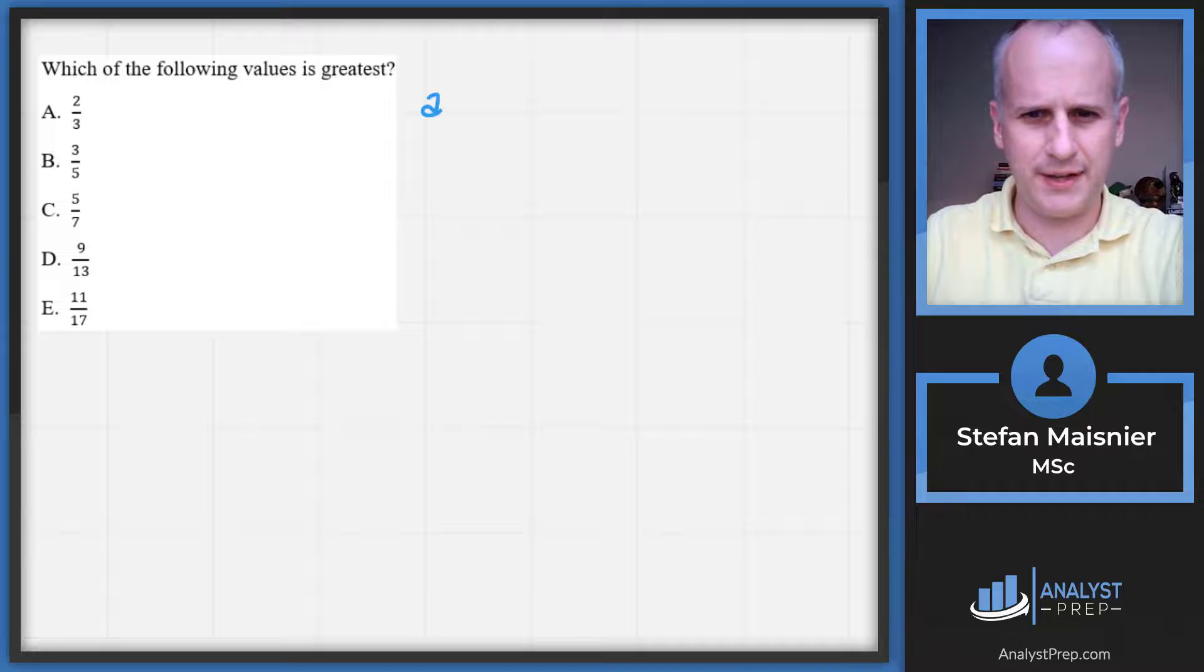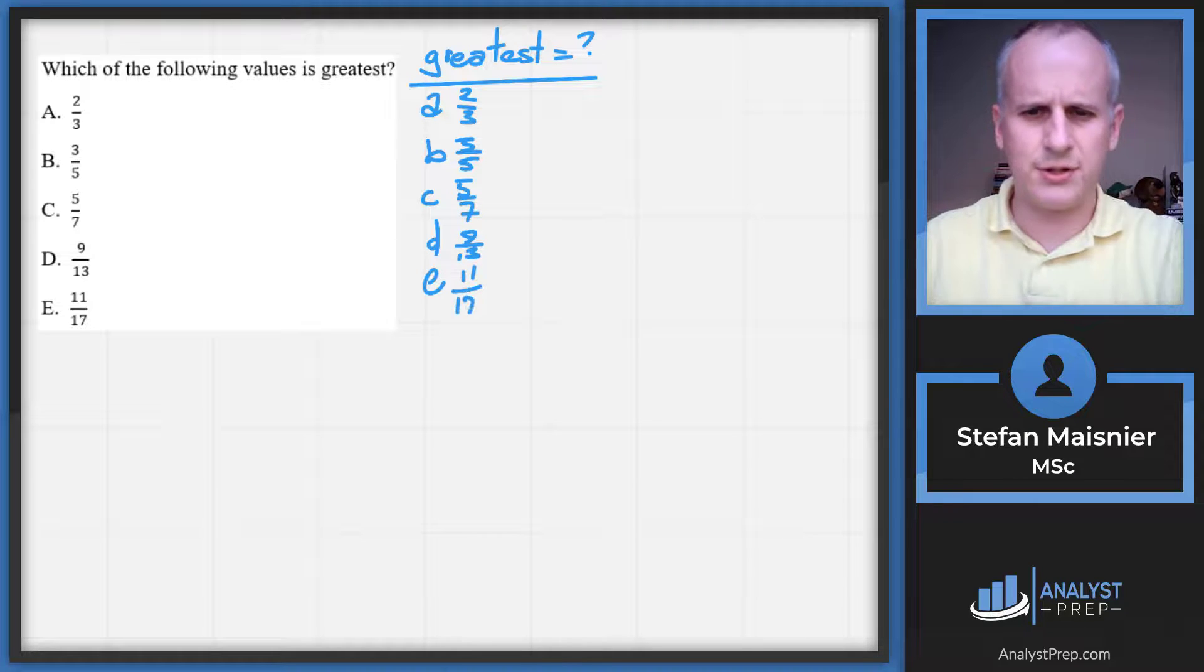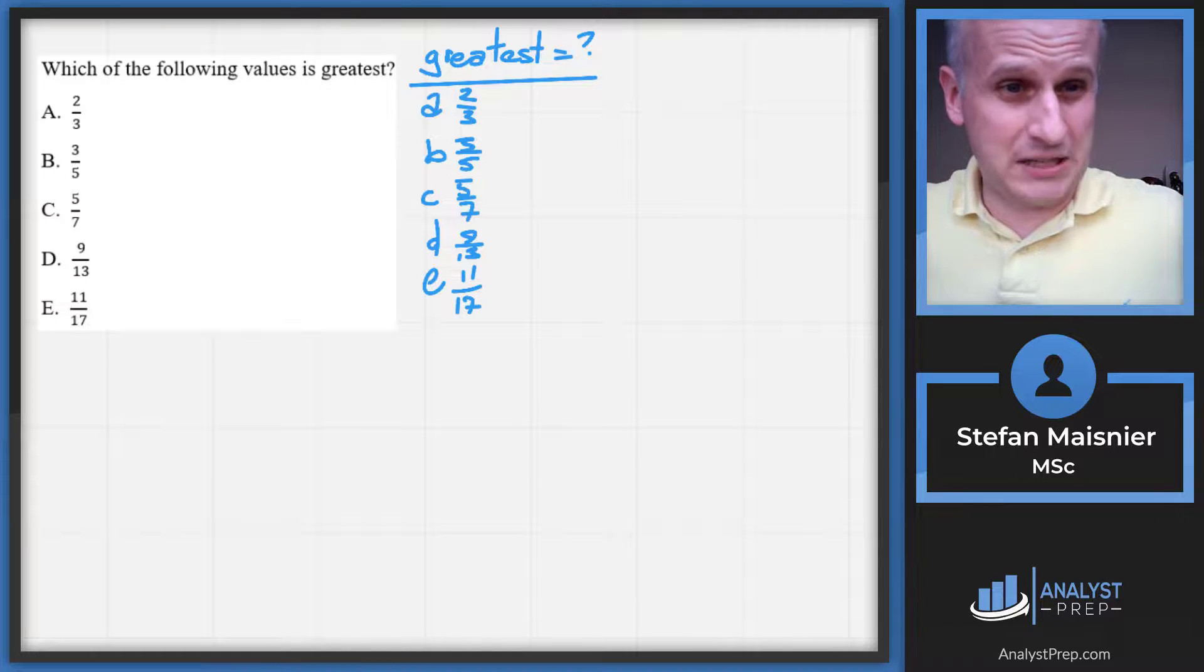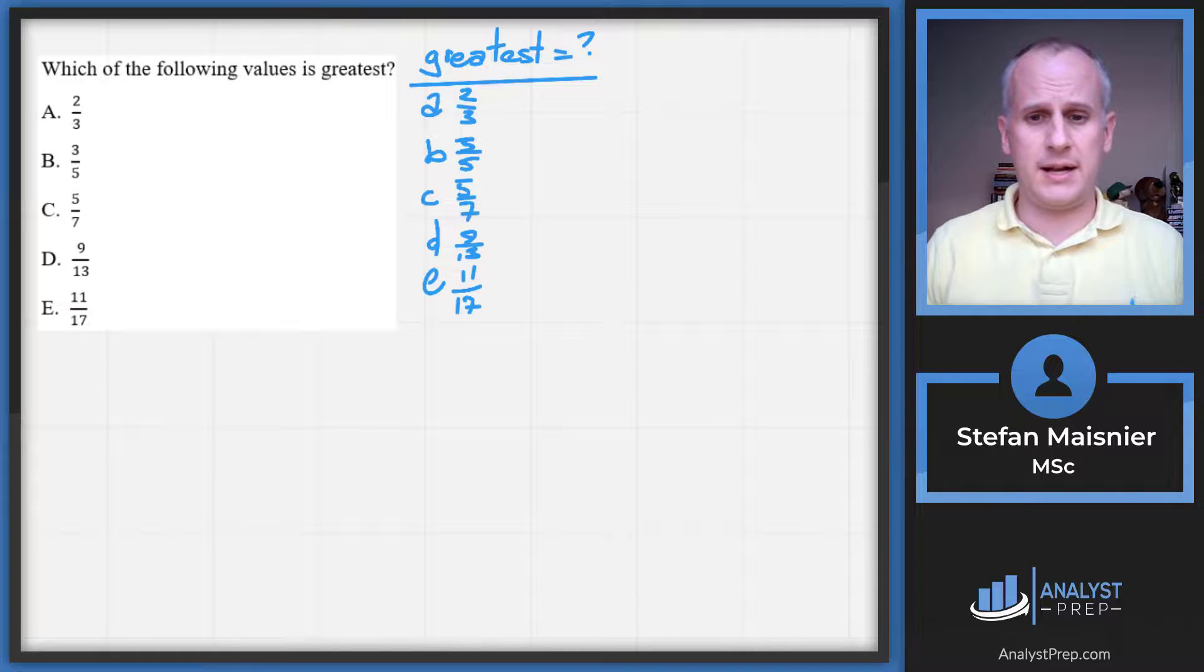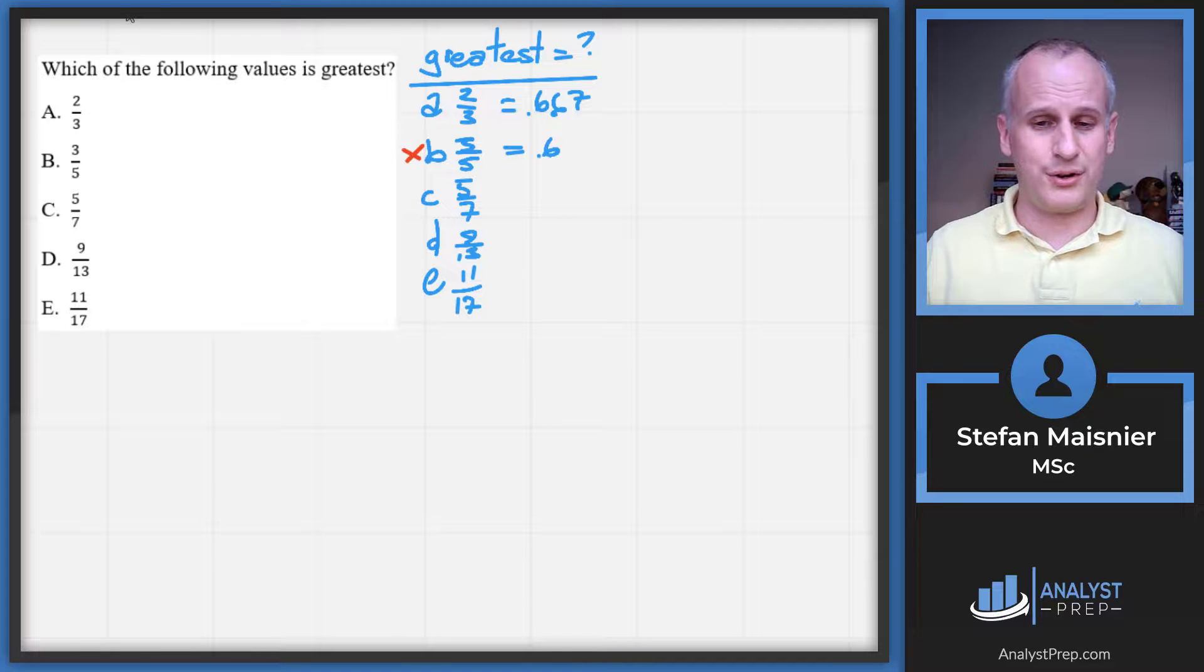Here we are on the whiteboard with a sample problem-solving question involving comparison of fractions. We'll use the bow tie method. Let's set up our scratch pad with A, B, C, D, E. We're looking for the greatest: two thirds, three fifths, five sevenths, nine thirteenths, and 11 seventeenths. First, estimate common fraction to decimal conversions. Two thirds is 0.667, three fifths is 0.6. So B is out because I have to compare two thirds against the others.